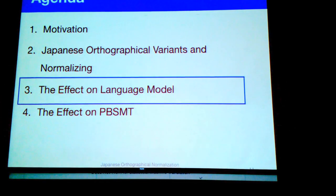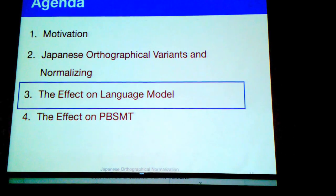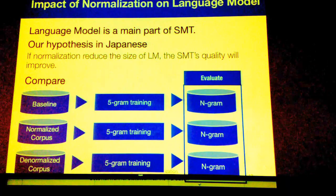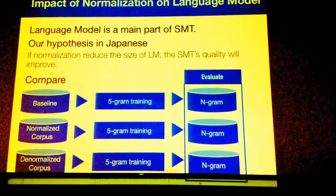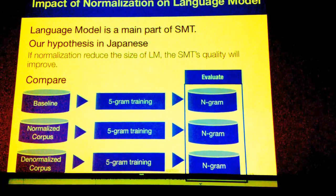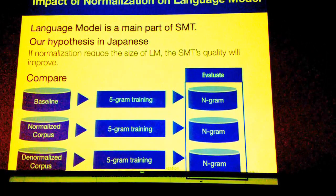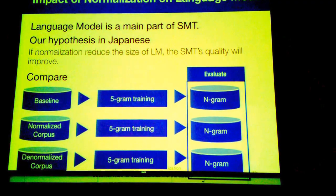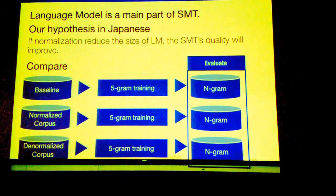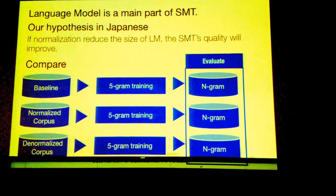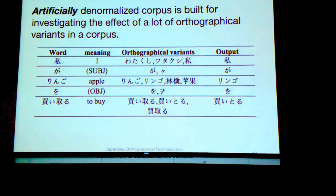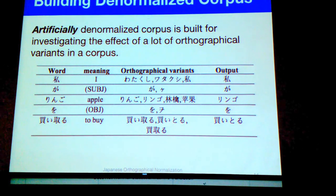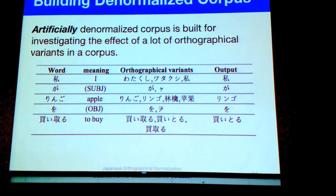Before the SMT experiment, we investigated the effect on the language model. The main reason is that the language model is a core part of statistical machine translation. Our hypothesis is: if normalization reduces the size of the language model, SMT quality will improve. We compare three patterns: a baseline raw-text corpus, a normalized corpus, and a denormalized corpus. The denormalized corpus is an artificial corpus created to investigate the effect when a corpus has many orthographical variants.